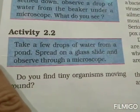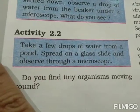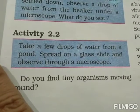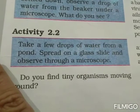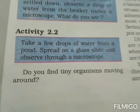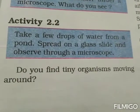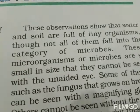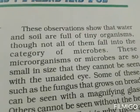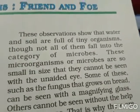Now Activity 2.2: take a few drops of water from a pond, spread on a glass slide and observe through a microscope. Mostly you will see amoeba and paramecium — the microorganisms most present in pond water. These observations show that water and soil are full of tiny organisms, though not all of them fall into the category of microbes.